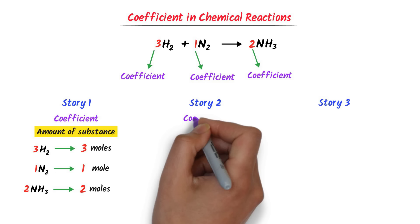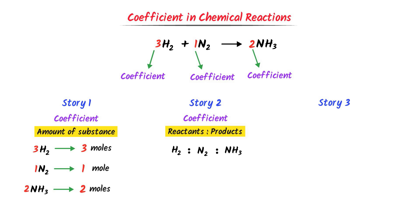Secondly, coefficients represent the ratio of reactants to products. For example, writing hydrogen gas to nitrogen gas to NH₃: the coefficient of hydrogen gas is 3, that of nitrogen gas is 1, and that of NH₃ is 2. Hence this is the ratio of reactants to products.